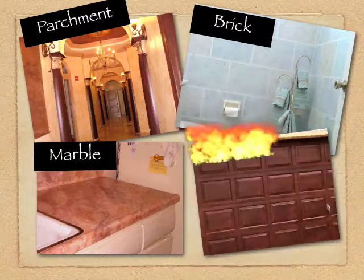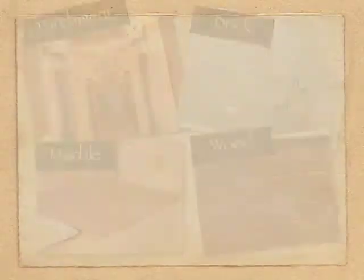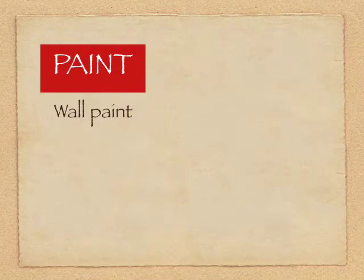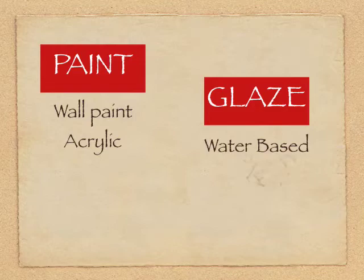To faux paint you will need paint in the form of wall paint or acrylic and a glaze, the most popular being water-based, metallic, or textured.